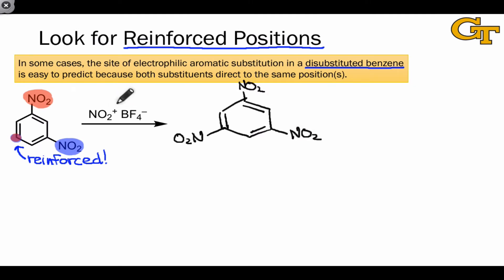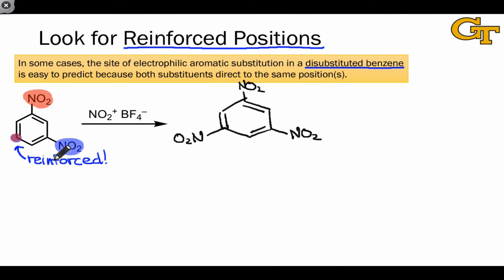Just a brief note on the reaction conditions: NO2+ BF4- is a salt that supplies the NO2+ cation directly. This is needed because the starting material is extremely deactivated toward electrophilic aromatic substitution, because it is extremely electron-poor.